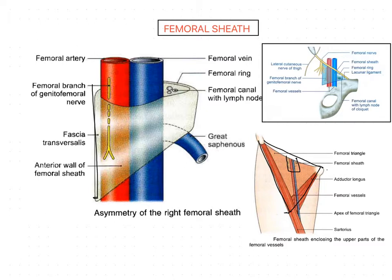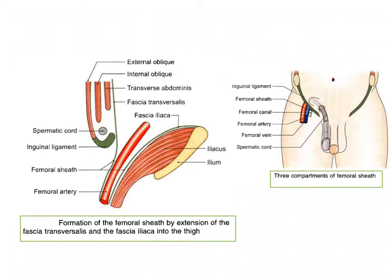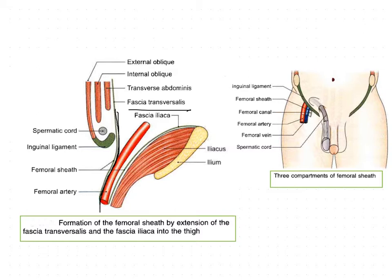The femoral sheath is formed by the downward extension of two layers of fascia of the abdomen. The anterior wall of the sheath is formed by the fascia transversalis.